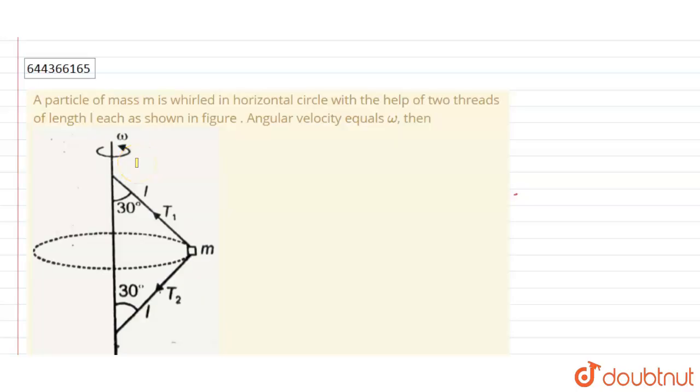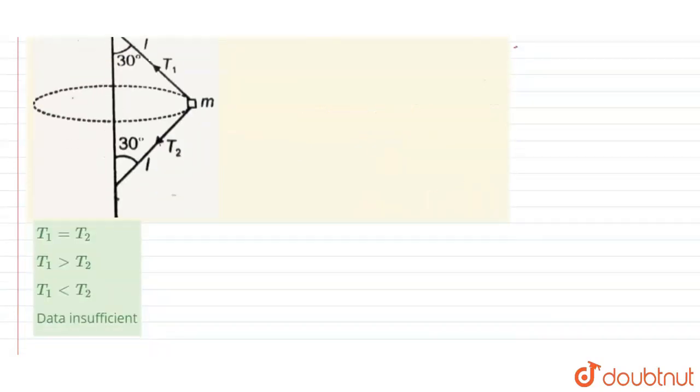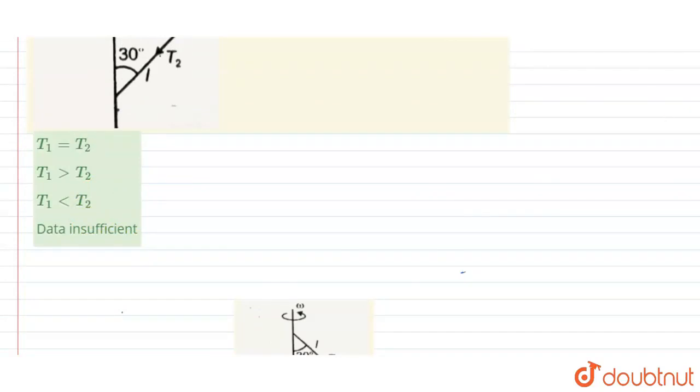It is saying that a particle of mass m is whirled in a horizontal circle with the help of two threads of length l each, as shown in the figure. Angular velocity is given here as omega. Then we have to, we have given these four options.